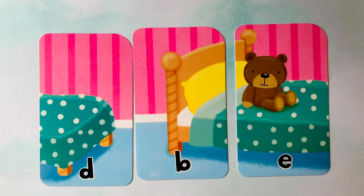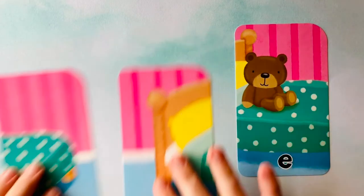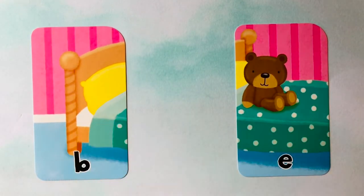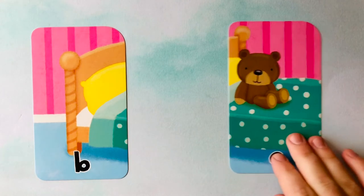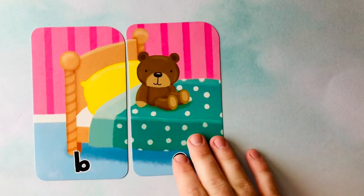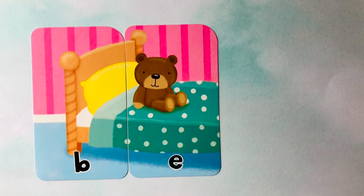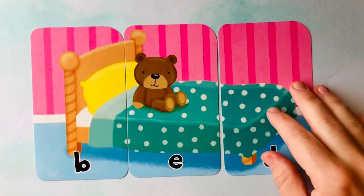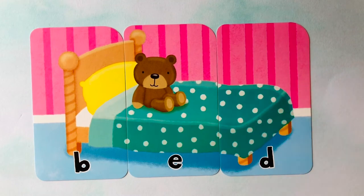Do you know how to spell bed? It starts with a B. In the middle, there's an E. And it finishes with a D. Bed. B, E, D. Can you spell it with me?